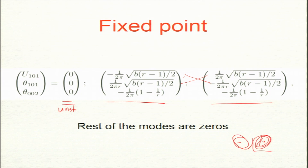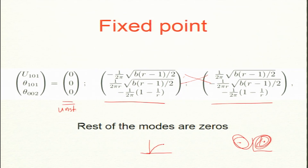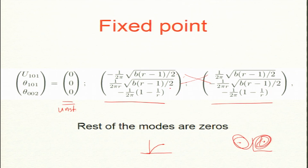Till small r around 13 we get a stable time-independent solution. This was worked on by a student named Vikas and is also in the book. Vikas did a full bifurcation diagram and found that around r=13 the behavior changes and these modes start oscillating.